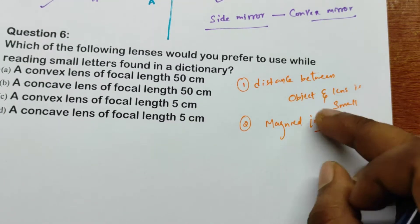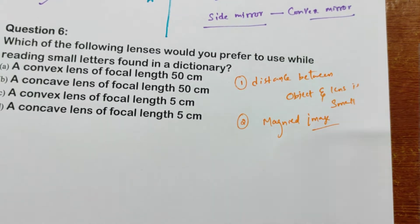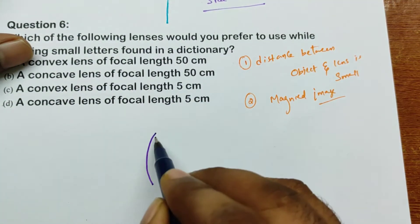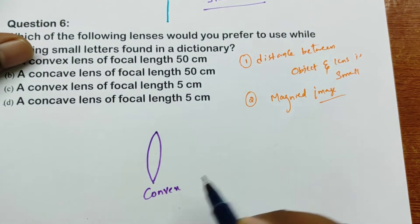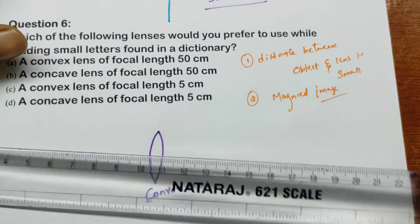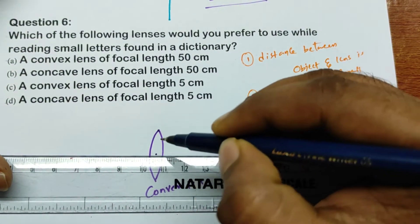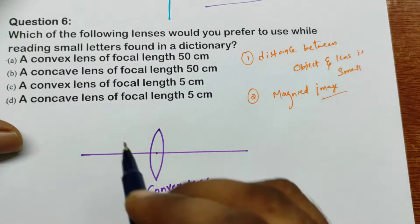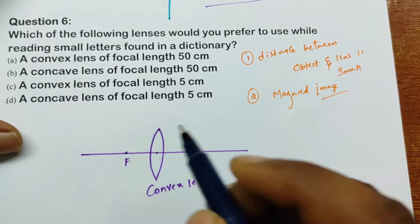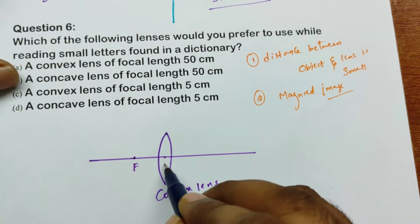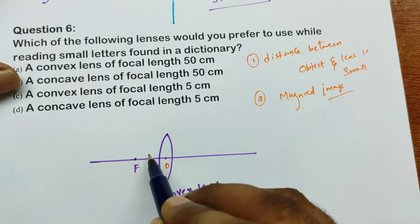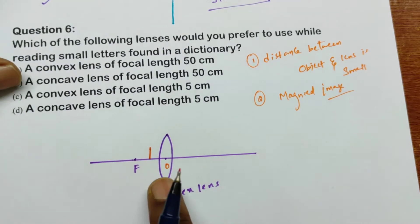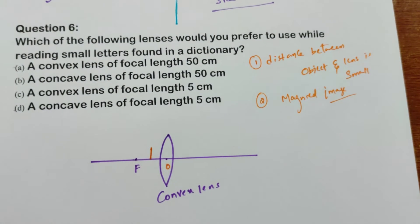This is possible only for one type of lens — a convex lens. In a convex lens, we have an optic centre and a principal axis. Let me draw the principal axis and mark the focus here. In a convex lens, if you place the object between the optic centre O and the focus F, something special happens.